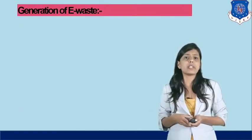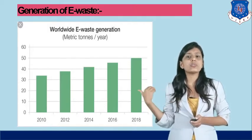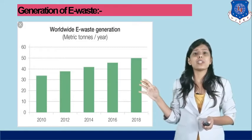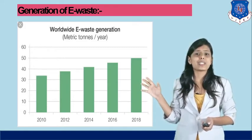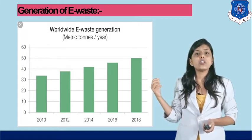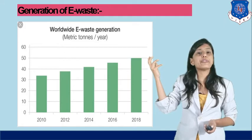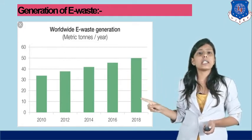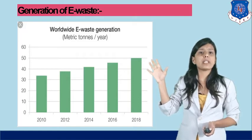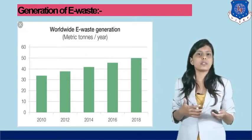Monitoring and control instrumentation and automatic dispensers are also known as electronic waste because they consist of electronic components. Now, how is e-waste generated? E-waste generated worldwide was low in 2010, but by 2012 it was 40 million metric tons. In 2014 it increased further, and by 2016 it reached up to 50 million metric tons, increasing further in 2018.